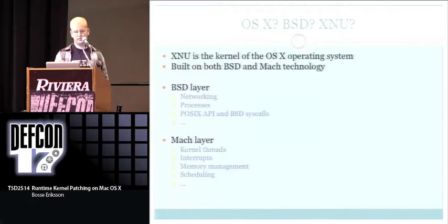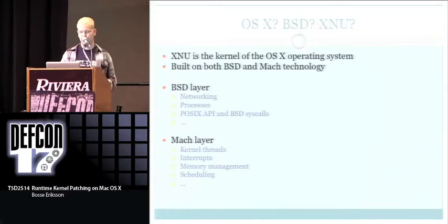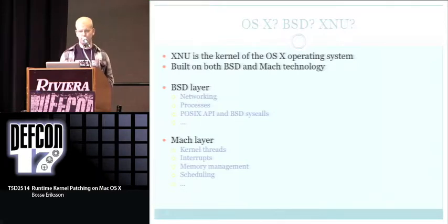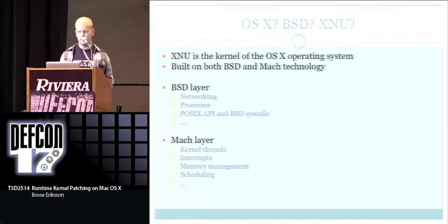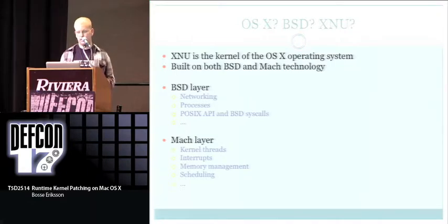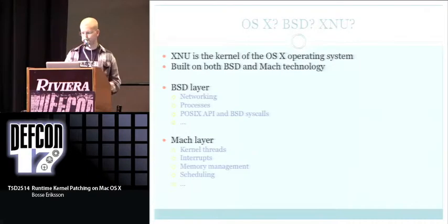Short intro on OS X and the XNU kernel. The XNU kernel is built on both BSD and Mach technology. Mach is the microkernel which runs at the bottom of the OS, and you also have a BSD layer. The BSD layer is responsible for networking, processes, POSIX API, and BSD syscalls — so you can do any POSIX stuff on OS X without touching the Mach layer at all. The Mach layer handles kernel threads, interrupts, memory management, and scheduling.